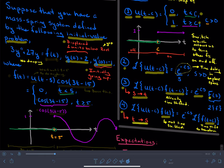Now what we have here is an f of t, an external forcing function. And that external forcing function is given by this guy right here.